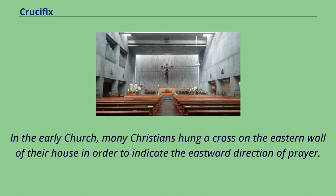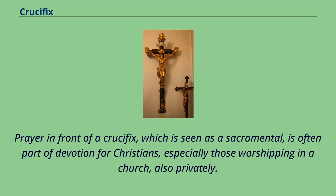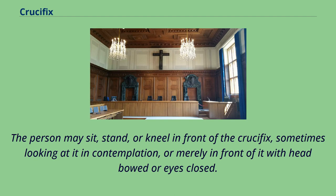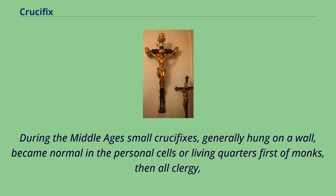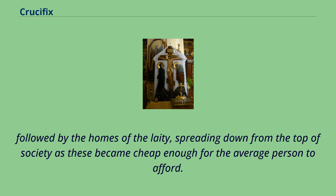In the early church, many Christians hung a cross on the eastern wall of their house in order to indicate the eastward direction of prayer. Prayer in front of a crucifix, which is seen as a sacramental, is often part of devotion for Christians, especially those worshipping in a church, also privately. The person may sit, stand, or kneel in front of the crucifix, sometimes looking at it in contemplation, or merely in front of it with head bowed or eyes closed. During the Middle Ages, small crucifixes generally hung on a wall became normal in the personal cells or living quarters first of monks and all clergy, followed by the homes of the laity, spreading down from the top of society as these became cheap enough for the average person to afford.